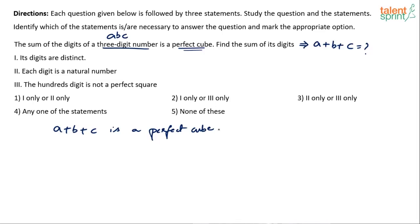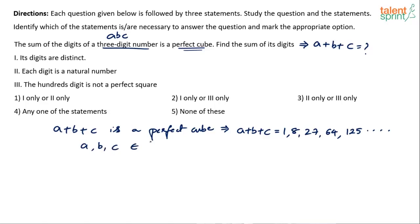So what are the possible values? a plus b plus c should be a perfect cube. What are the perfect cubes? 1, 8, 27, 64, 125 and so on. Remember, a, b and c are digits, so they belong to values 0 to 9. a can be between 0 to 9, b also 0 to 9, c also 0 to 9. All three cannot be 0 because if all three are 0, it becomes 000 — a single digit number.